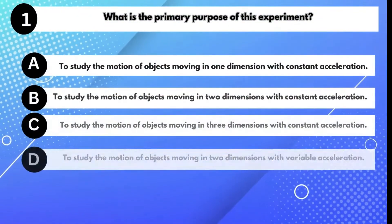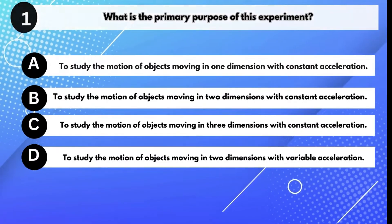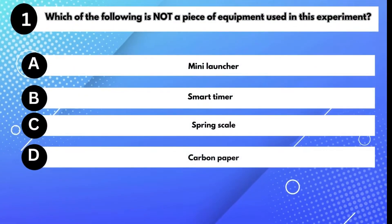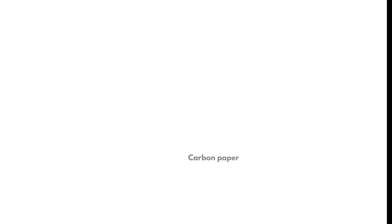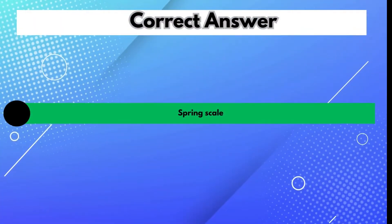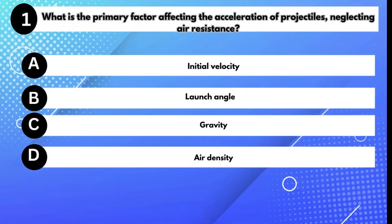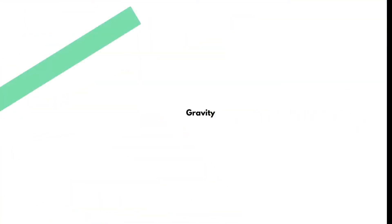What is the primary purpose of this experiment? Answer B: To study the motion of objects moving in two dimensions with constant acceleration. Which of the following is not a piece of equipment used in this experiment? Answer C: Spring scale. What is the primary factor affecting the acceleration of projectiles, neglecting air resistance? Answer C: Gravity.